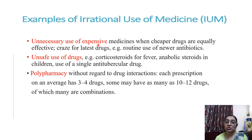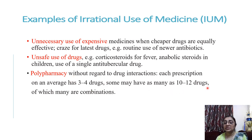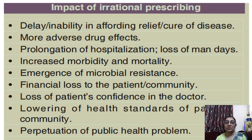Unnecessary use of expensive drugs when cheaper, equally effective alternatives are available — for example, routine use of newer, costly antibiotics. Unsafe use of drugs like corticosteroids for fever, anabolic steroids in children, or single anti-tubercular drugs, which are very dangerous. Polypharmacy without regard for drug interactions — on average three to four drugs are prescribed per prescription, and some prescriptions contain as many as ten to twelve drugs, many of which are combinations.